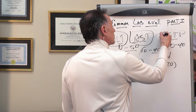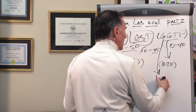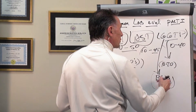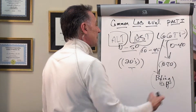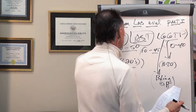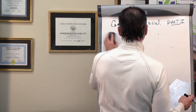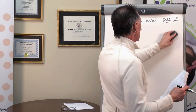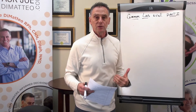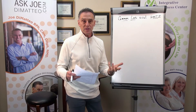GGTP is also part of the liver enzyme cascade, but focuses a little bit more on what we would call the biliary tree or the gallbladder. When this number is elevated, it is often more specific to gallbladder dysfunction. When you see these numbers, what does it mean to you? Once you have a lab evaluation, what does it mean?